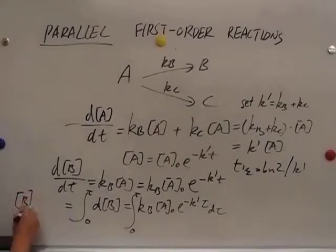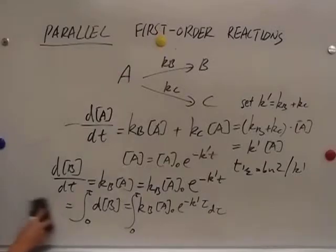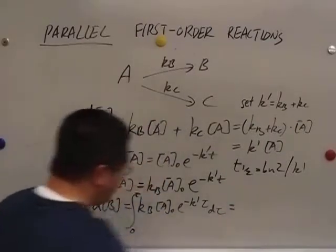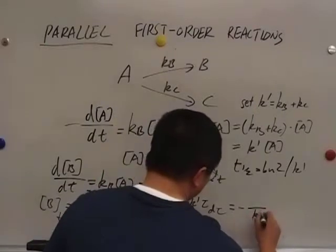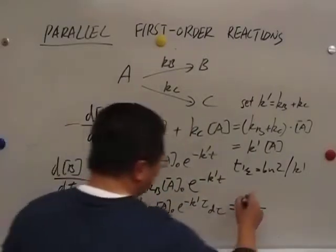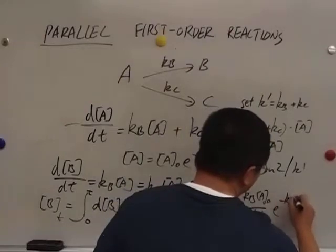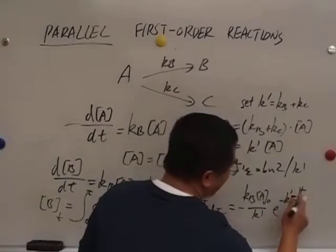Okay, and we're going to just integrate this side and this side. So over here, it's just B, concentration of B at time t, minus the initial concentration of B, which is zero. So we can just erase this. Again, this is the concentration of B at time t. It's equal to the integral. How do we integrate this? It's very simple. It's just the exponential function. We have K prime on the bottom. We have KB and A naught on the top. And we have e to the power of negative K prime tau. Tau is from zero to t. We just plug in this tau equals t and tau equals zero.